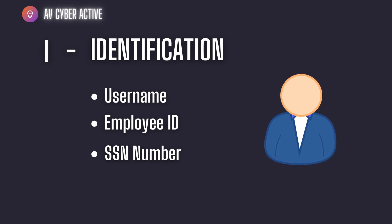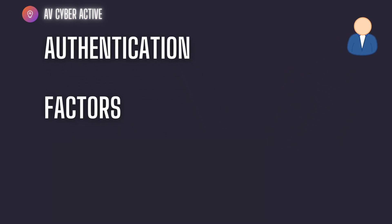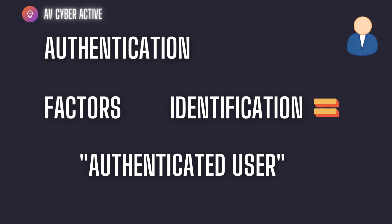Would you allow anybody to access your system just because they say who they say they are? No. You would go ahead and further authenticate them to verify their identity. So how do you prove if they're an authenticated user? There are many factors that come into the second A — authentication. There are in fact five factors of authentication which you add in addition to your identification to prove yourself as an authenticated user.